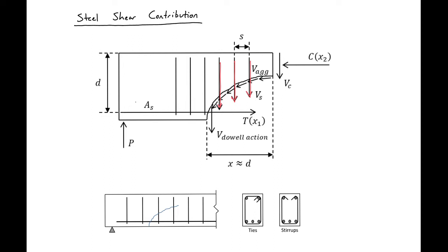In this case, we have three bars crossing our crack, so these three bars will contribute to our VS component. Our VS component will be made up of the area of our shear reinforcement AV times the stress in our shear reinforcement F sub R times the number of bars crossing our shear crack.